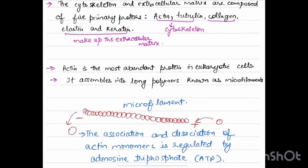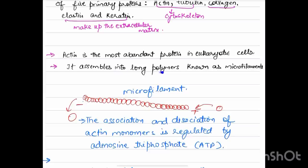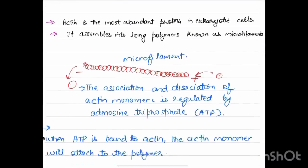Actin is the most abundant protein in eukaryotic cells and it assembles into long polymers known as microfilaments. Microfilaments have two ends: positive and negative. The negative end is for dissociation and positive end is for association or polymerization.